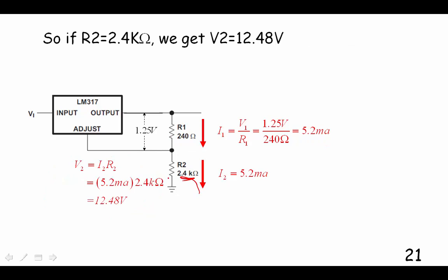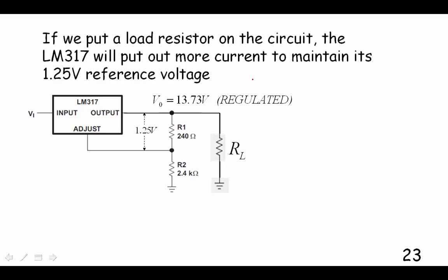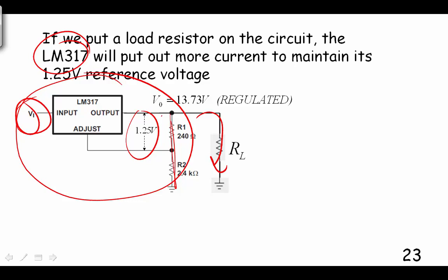Let's say we had R2, it's 2.4 kilohms. Then we'd have 12.48 volts dropping across R2, and we'd get an overall voltage of 13.73 volts. If we put a load resistor then on our circuit that is with the 317, the 317 will put out more current in order to maintain that voltage, this reference voltage. And it doesn't depend on what our input voltage is, as long as that input voltage is well above our output voltage.